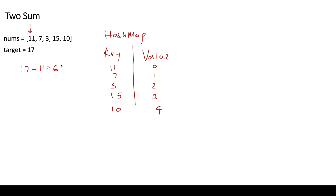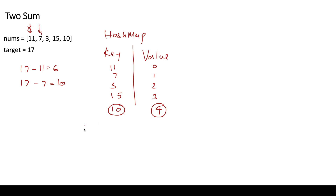We check whether 6 exists in the hash map. It does not, so we move to the next element. For 7, we need 17 minus 7 which is 10. We check whether 10 is in the hash map — and it is, at index 4. We store the index for the value so we can return it. Since 7 is at index 1 and 10 is at index 4, we return 1, 4.